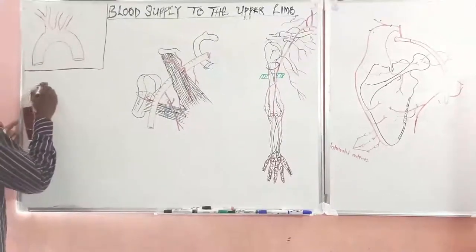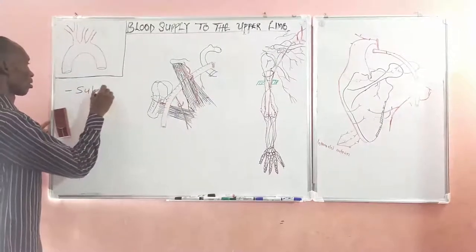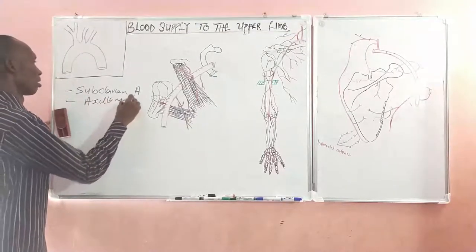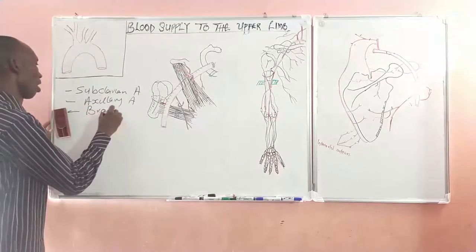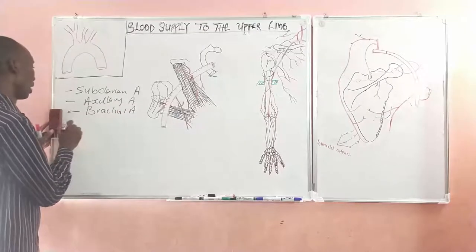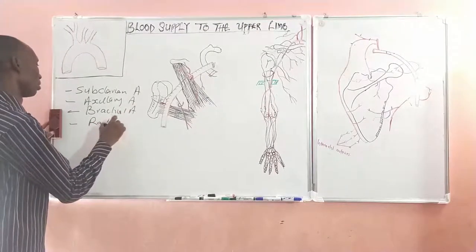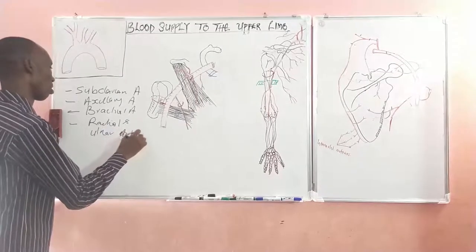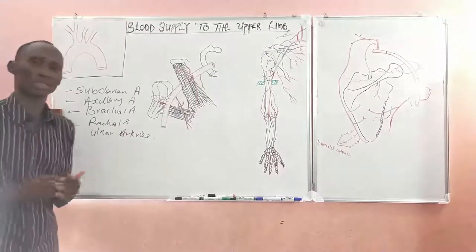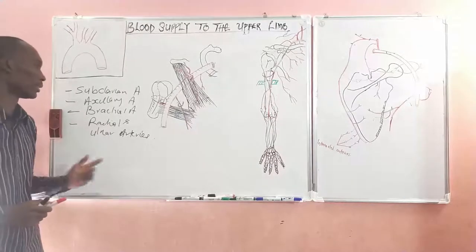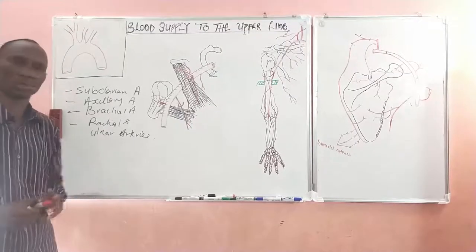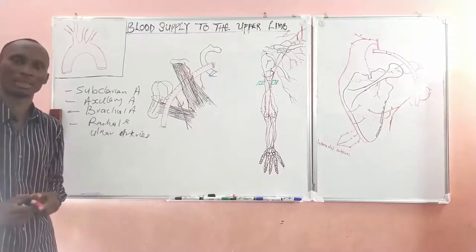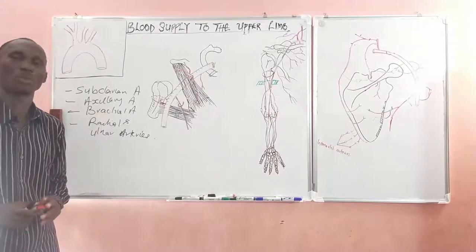So these vessels make up the arterial supply to the upper limb: first, the subclavian artery, then the axillary artery, followed by the brachial artery, and finally the radial and ulnar arteries. This will make up the content of our study of the arterial supply. For each of these vessels, we will look at the course of the vessel, the branches, the distribution, and the relations.